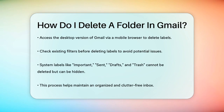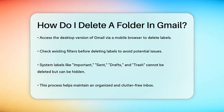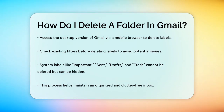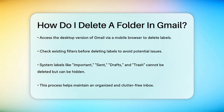Before you delete any labels, it's a good idea to check your filters. Some filters might be using the labels you're about to delete, so you'll need to adjust those filters first to avoid any issues. System labels, which are created by Gmail, cannot be deleted — these include labels like Important, Sent, Drafts, and Trash. However, you can hide these labels if they're not useful to you.